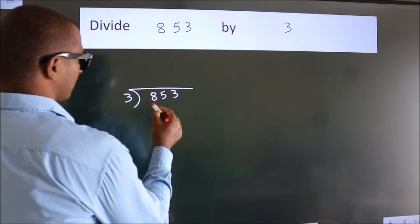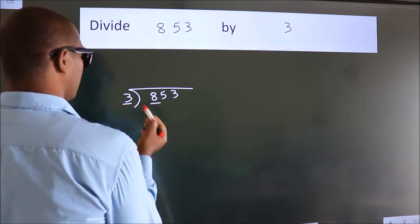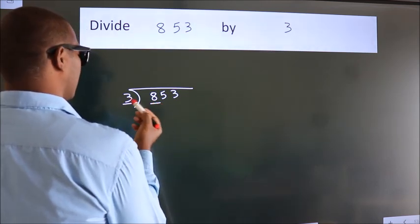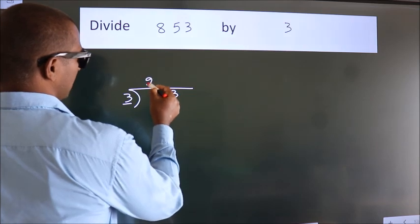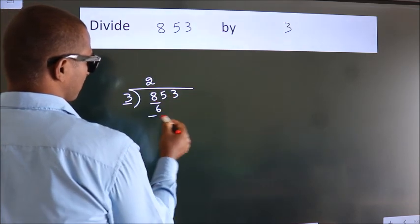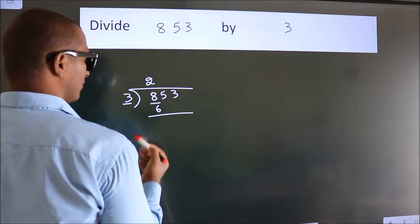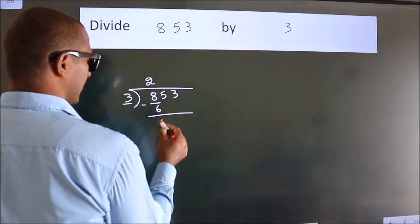Here we have 8, here 3. A number close to 8 in 3 table is 3 times 2 is 6. Now we should subtract. We get 2.